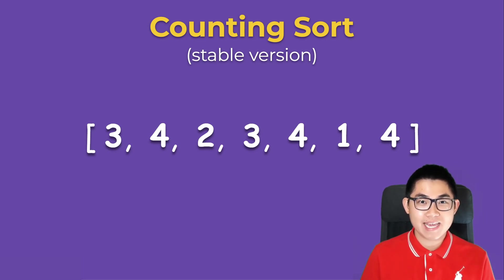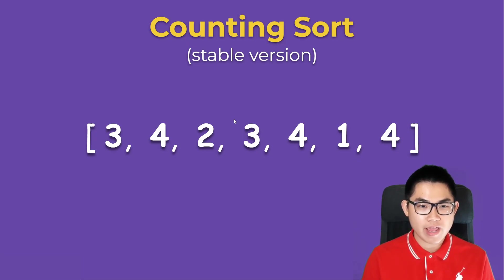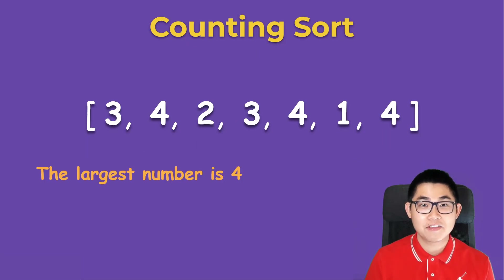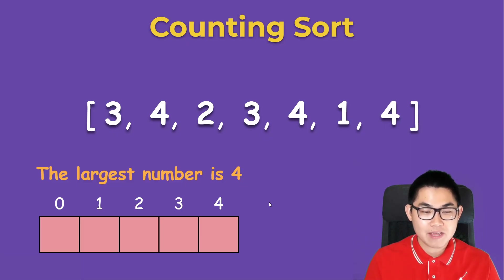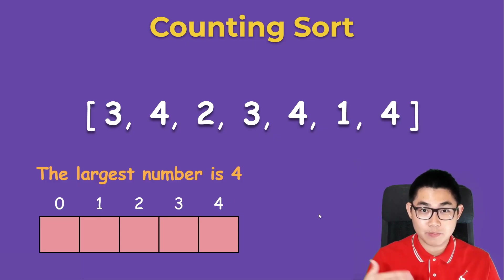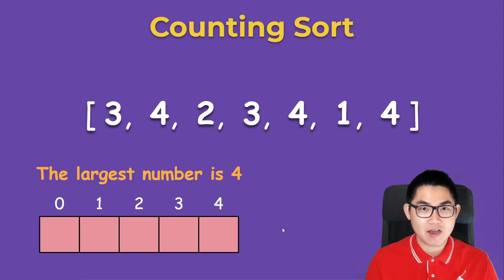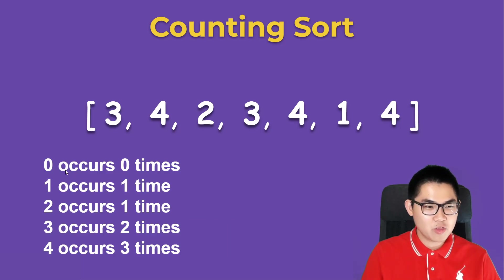In this video I'm going to explain the stable version of counting sort. Let's say this is your array and you want to sort it from least to greatest. The first step is to figure out what is the largest number in this array — the largest number is four. We're going to create an array with indices from zero to four, so that's size five. You take the largest number plus one to get the size of this array.